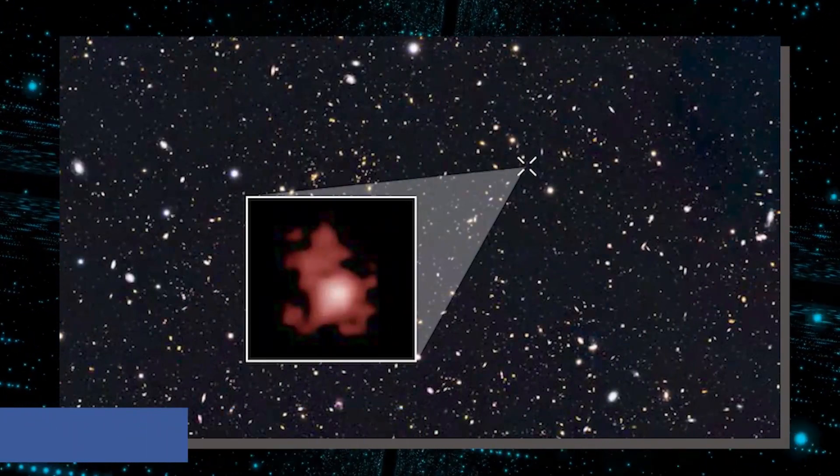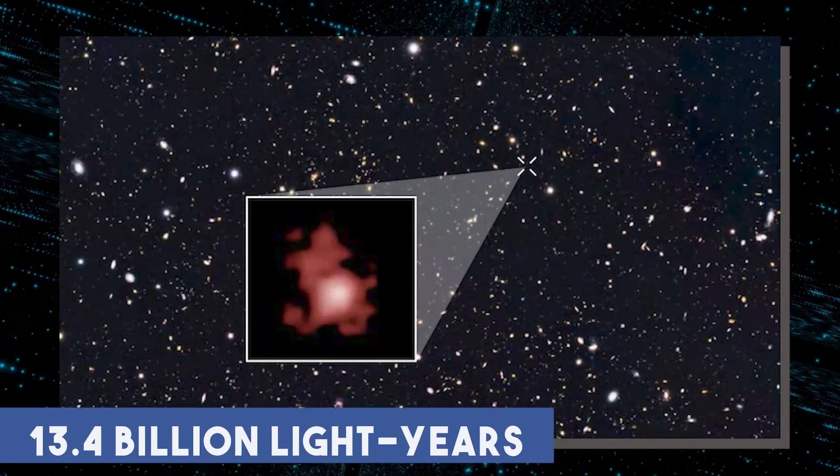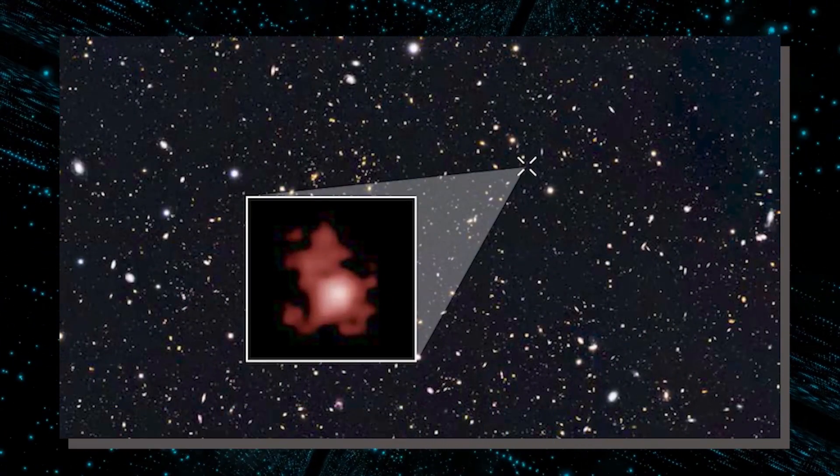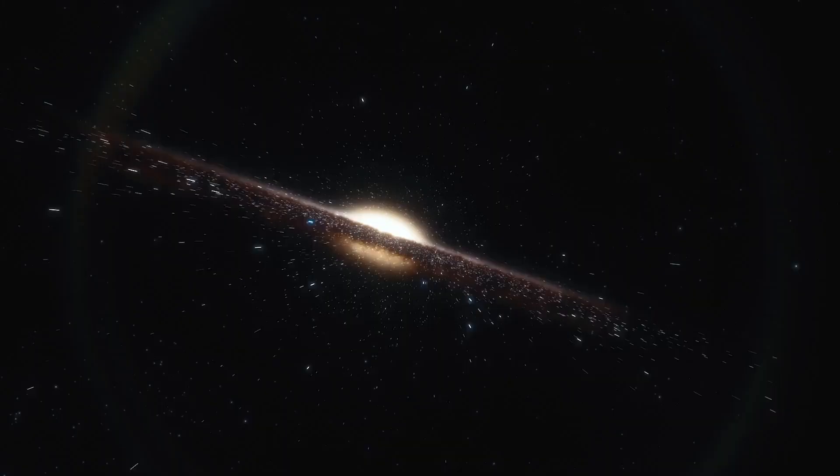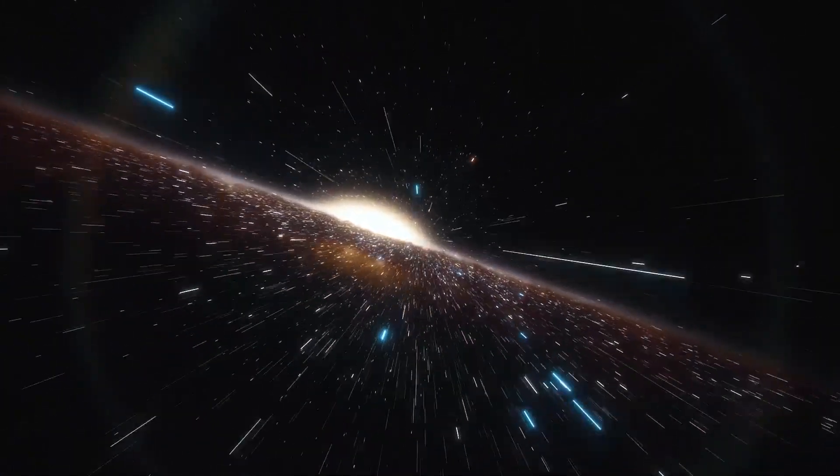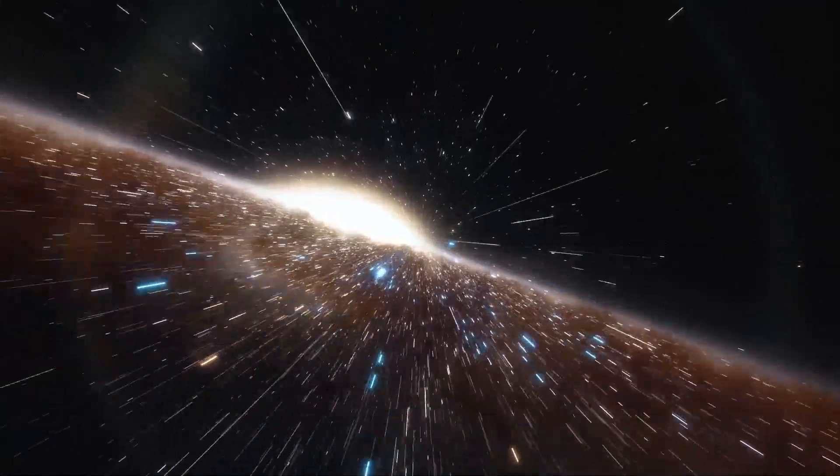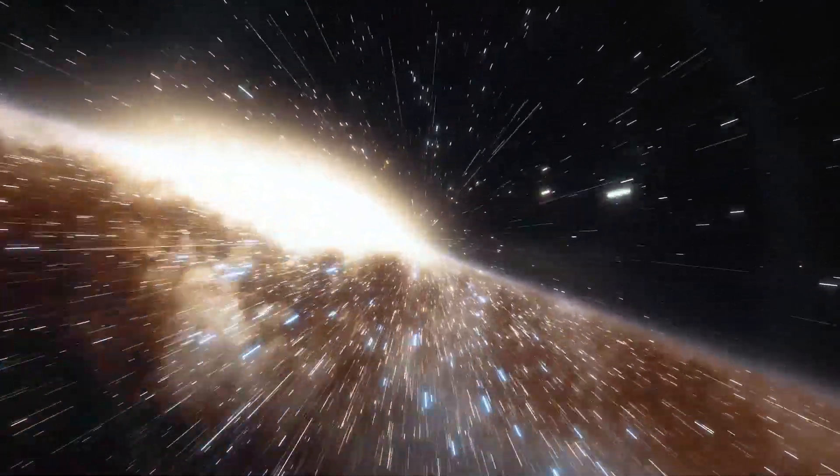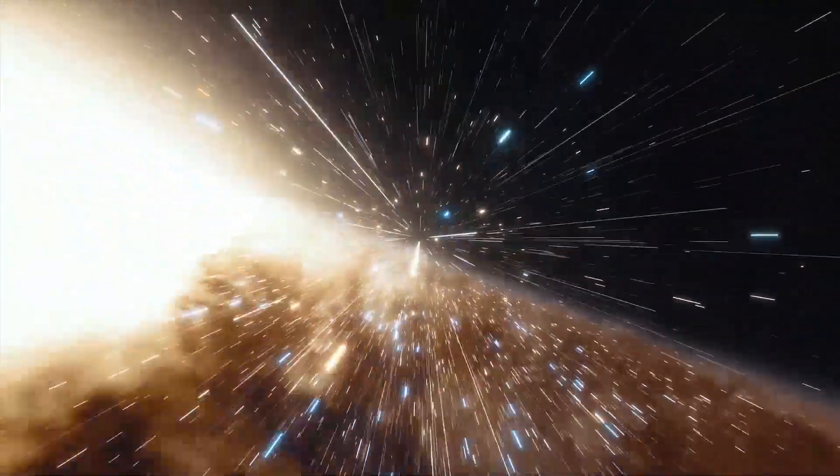The GNZ 11 galaxy, which is approximately 13.4 billion light years distant, is the furthest object spotted by Hubble. The Big Bang happened 13.7 billion years ago, so there is a 300 million year gap between that event and the depth to which the Hubble can appear.